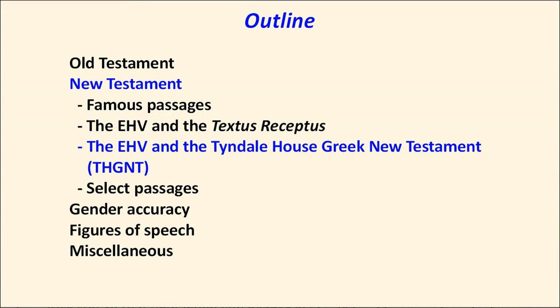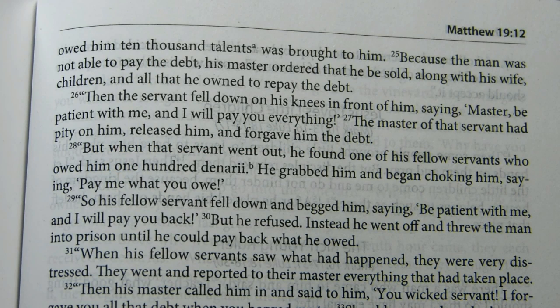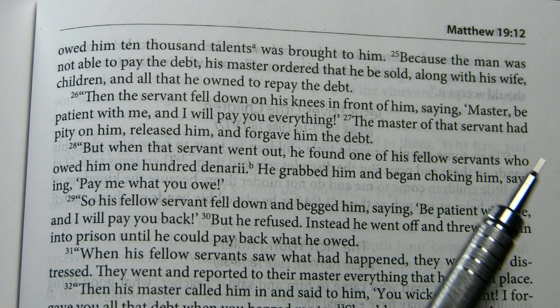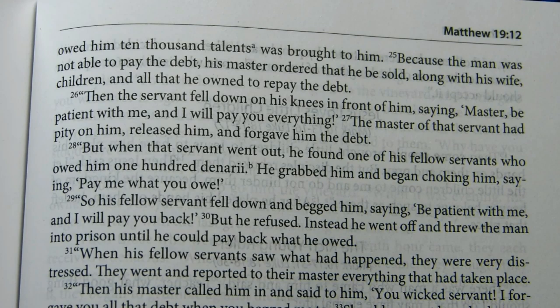The next section looks at the EHV and the Tyndale House Greek New Testament (THGNT). When preparing a review of the THGNT, I found nine instances where Tyndale House disagrees with the United Bible Society's 5th edition (UBS 5) at points where UBS 5 rates its reading as certain. I examined those nine passages to see whether the EHV agrees with Tyndale House or UBS 5. In seven of the nine locations, the EHV agrees with Tyndale House. The first example is Matthew 18:26, where Tyndale House and the EHV include "Master" in the text, while UBS 5 omits it.